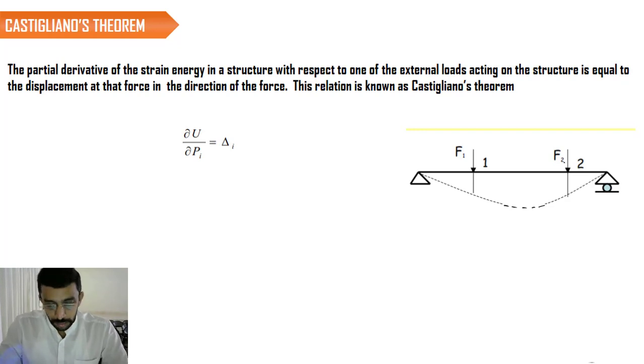When we apply F1 and F2, we can say that the deflection at 1 has got two parts. One is X11 and the second one is X12, where X11 is caused due to the load 1 and X12 is caused due to load 2. Similarly, we have two displacements at location 2: one is X21 and the second one is X22.